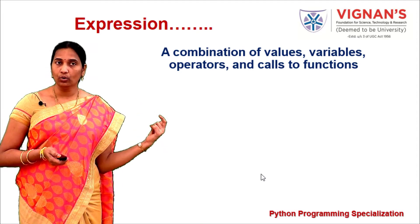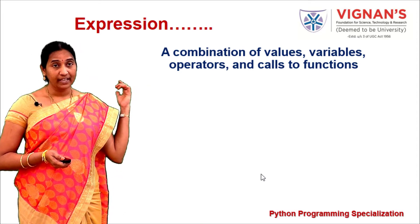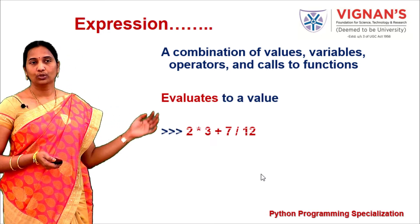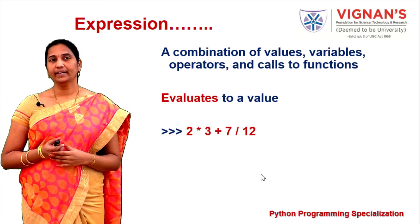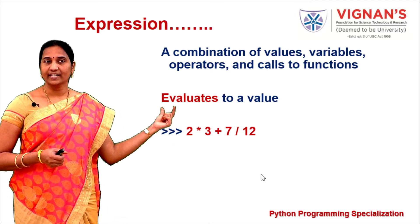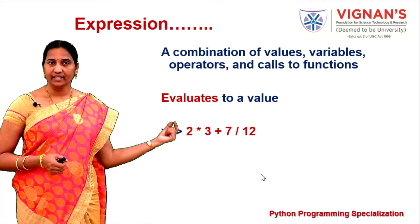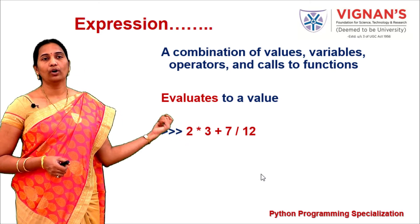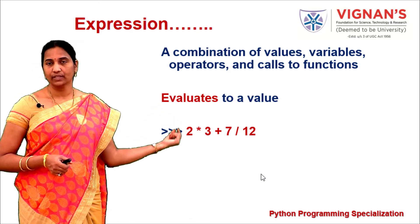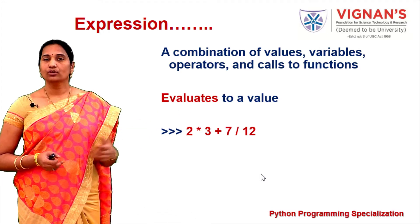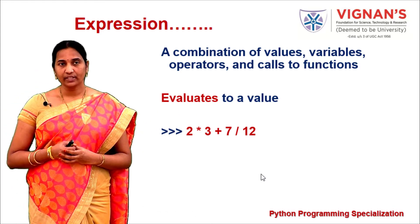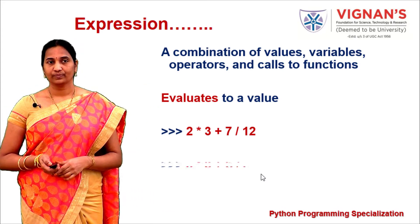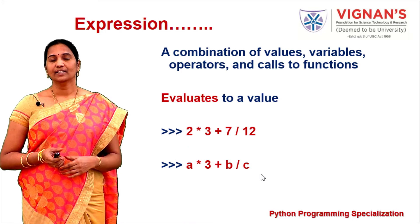An expression can include one or more of any of these in combination. For example, 2 * 3 + 7 / 12 is an expression — it contains a combination of operands (values) and operators like multiplication, addition, and division. When these kinds of expressions are executed, they evaluate to a single value.